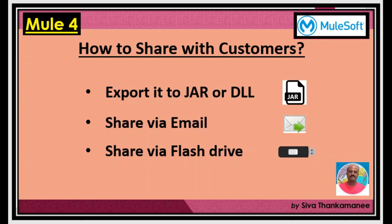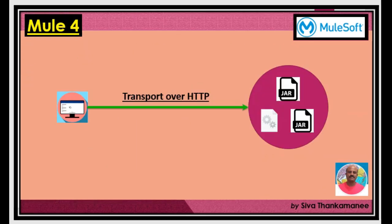Let's think about the drawbacks of this method. What if there is a change in your code? For example, you first developed address validation only for India and then expanded it to work for any country. You would need to repackage and resend it to all customers. With many customers using the JAR or DLL, you need to inform everyone, and some might forget to get the latest version. You also have no control over whether customers stop using it when their licensing period is over.